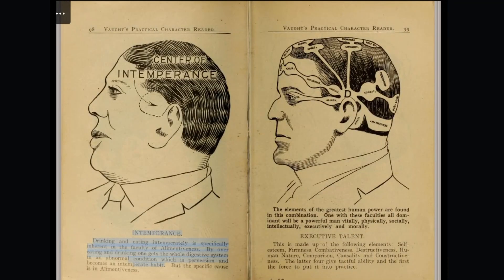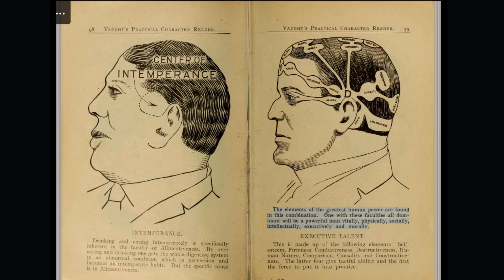Intemperance. Drinking and eating intemperately is specifically inherent in the faculty of alimentiveness. By overeating and drinking one perverts and degrades the whole digestive system. The elements of the greatest human power are found in this combination. One with these faculties all-dominant will be a powerful man vitally, physically, socially, intellectually, executively, and morally.